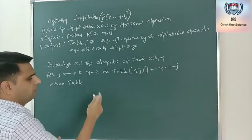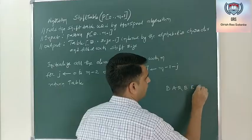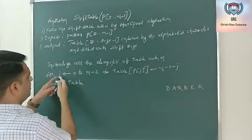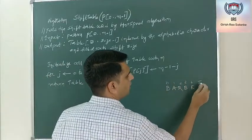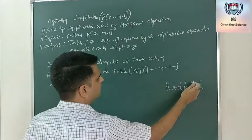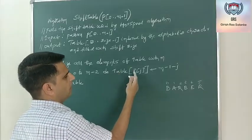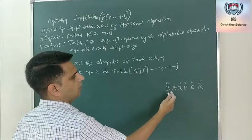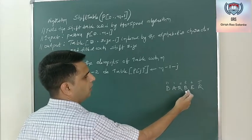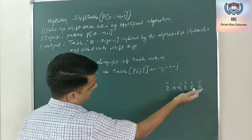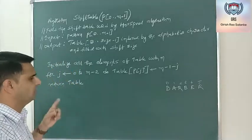A for loop runs J from 0 to m minus 2 — not m minus 1, so the last character is excluded. For each character P[J], we compute the shift value as m minus 1 minus J, which gives the distance from that character to the last character of the pattern. If a character repeats, later iterations overwrite with the smaller value, capturing the rightmost occurrence. Finally, we return the table.